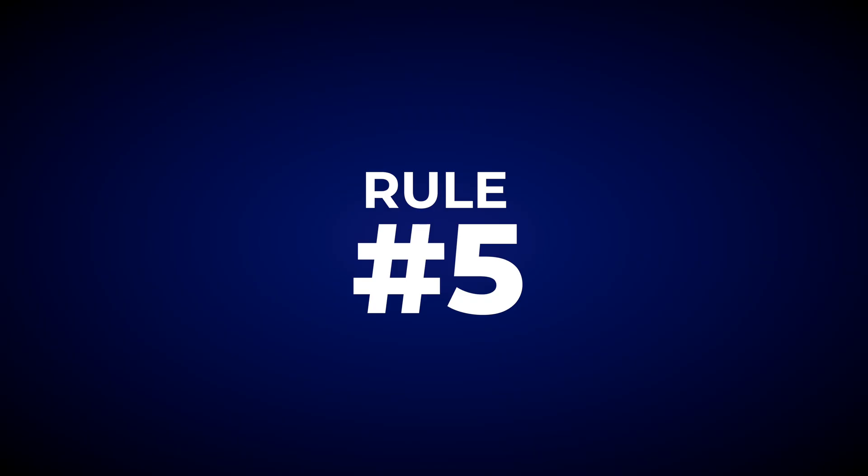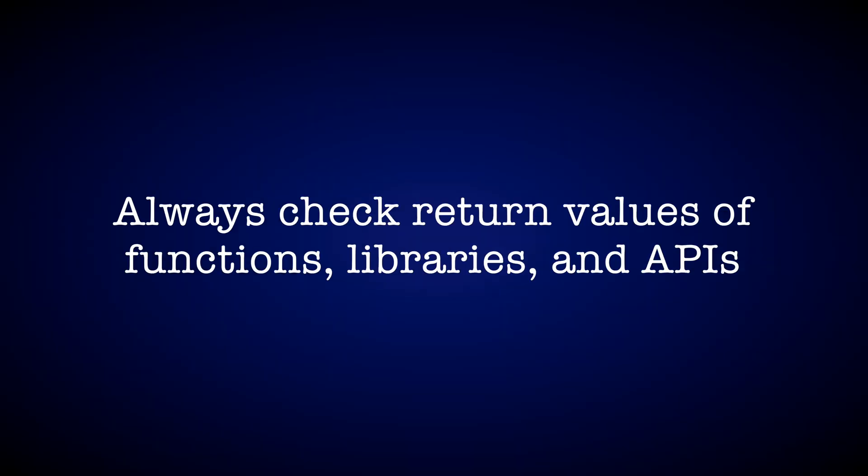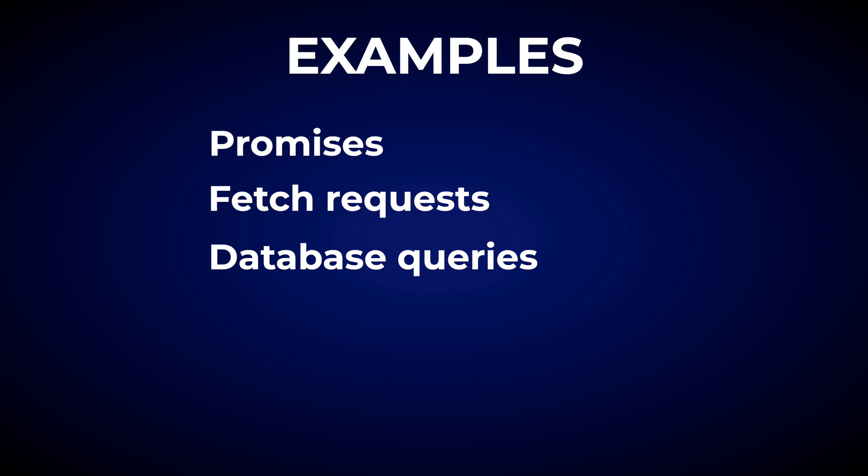Following these simple practices makes your code way better, and it brings us to rule number five. Have you ever had your application crash because you assumed that some function succeeded, but it actually silently failed? Maybe you expected a DOM element to exist but it returned null, or you trusted an API call but it returned a different unsupported value. NASA engineers would never take that risk. Their coding standards require you to check every return value. If the return value is different than expected, you should treat it as an error and gracefully handle it. You should always verify return values from async calls like promises, fetch requests, database queries, DOM methods like querySelector and getElementById, and external APIs or utility libraries that can return null.